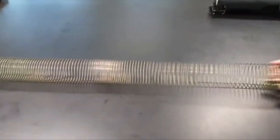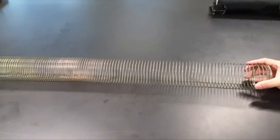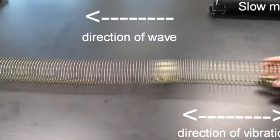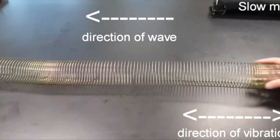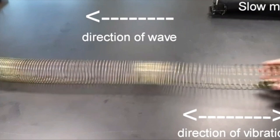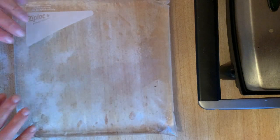Take a look at this slinky, for example. You can clearly see that there is a wave going from side to side. But we can also tell that the actual coils of the slinky aren't really moving all that much. Just enough to push the next coils in line. The same thing happens in this bag of water.